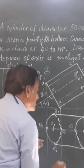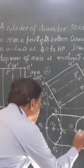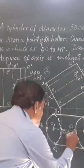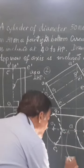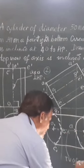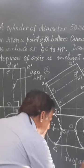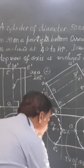And this axis, I can say this is O1, the axis - top view of the axis or axis of the object. The axis is parallel to VP.